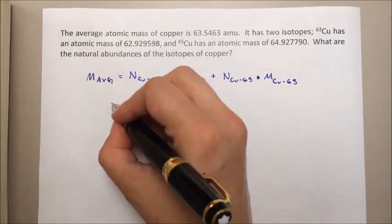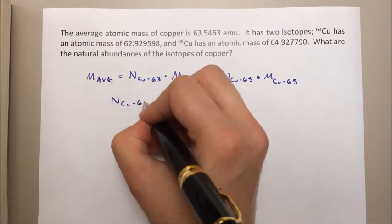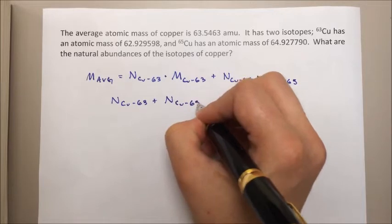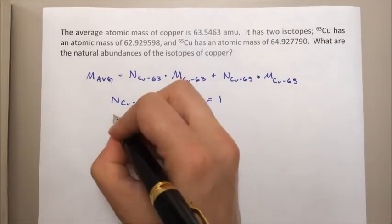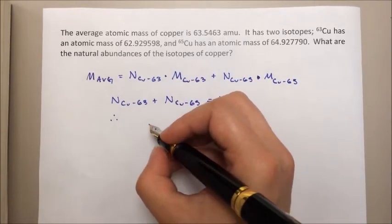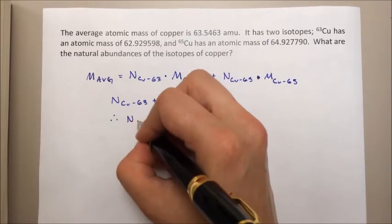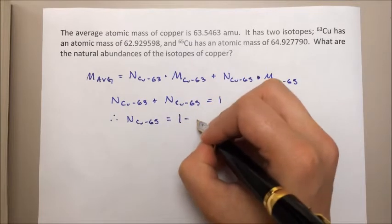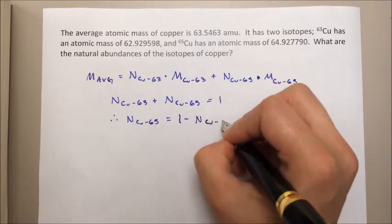We also know that the natural abundance of copper 63 plus the natural abundance of copper 65 must equal one. Therefore, we can say that the natural abundance of copper 65 equals one minus the natural abundance of copper 63.